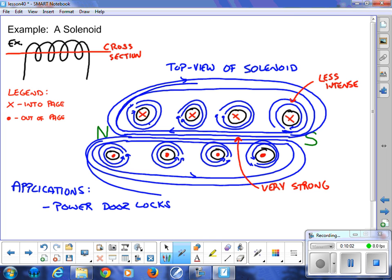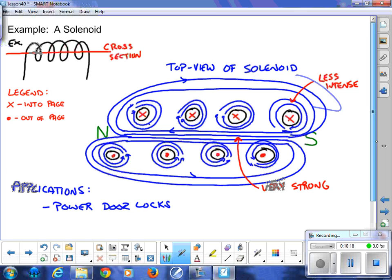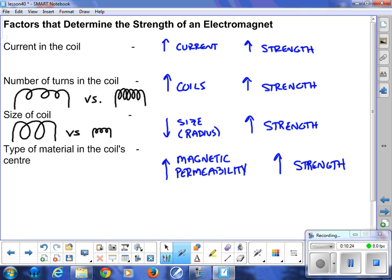If you place your fingertips on the X's, your thumb points to the north end of the solenoid, or of the magnetic artificial magnet, the electromagnet. That allows you then to draw the rest of your magnetic field lines outside. Magnetic field is the greatest inside the actual magnet, much weaker on the outside. It's most intense down the center of the magnet, and that's true for a bar magnet as well.